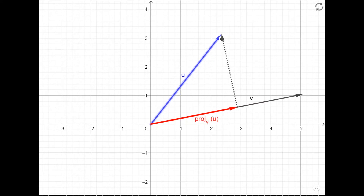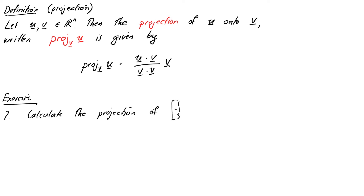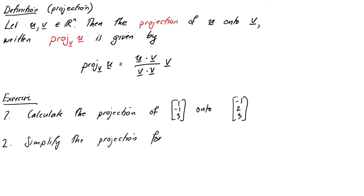Before we move on, let's do a couple of quick exercises to check you understand how the formula works. Number one: calculate the projection of the vector (1, −1, 3) onto the vector (−1, 2, 3). And secondly: simplify the projection formula in the case that v is a unit vector.